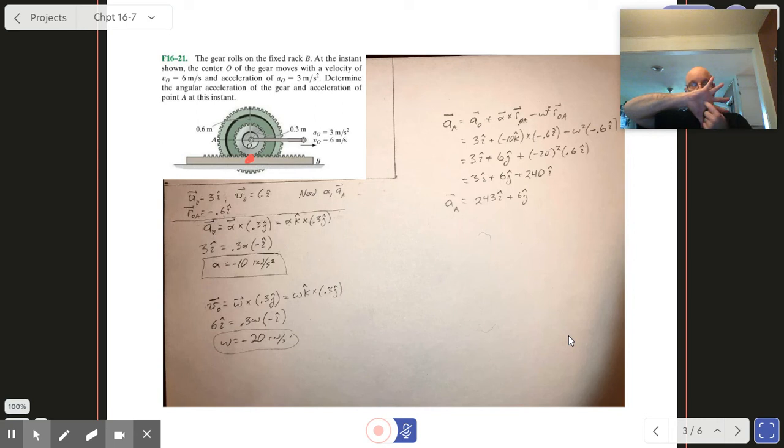In the last one we had to figure out what was the velocity and the acceleration of the center. This time they just flat out tell us what that is, which is pretty nice. So the first thing that I did was I just wrote down what they tell us there, and I went ahead and wrote down the vector from our known point to our unknown point, so r from O to A. It's to the left, so it's negative 0.6, where that's the radius.